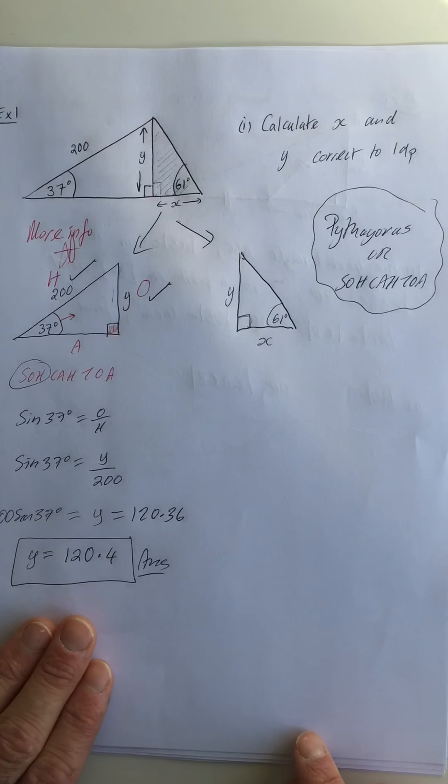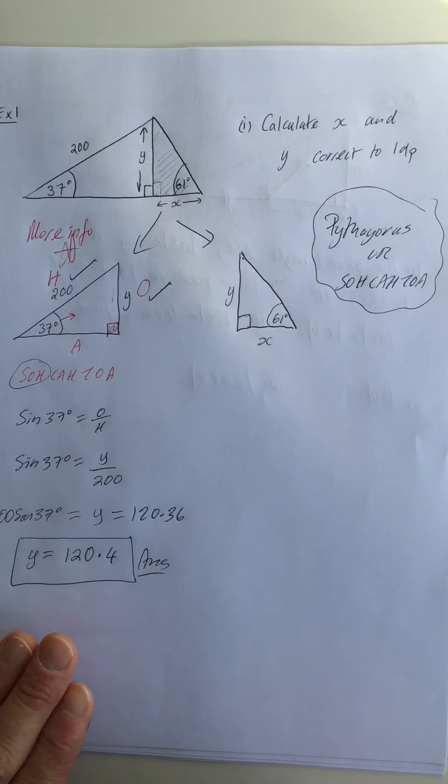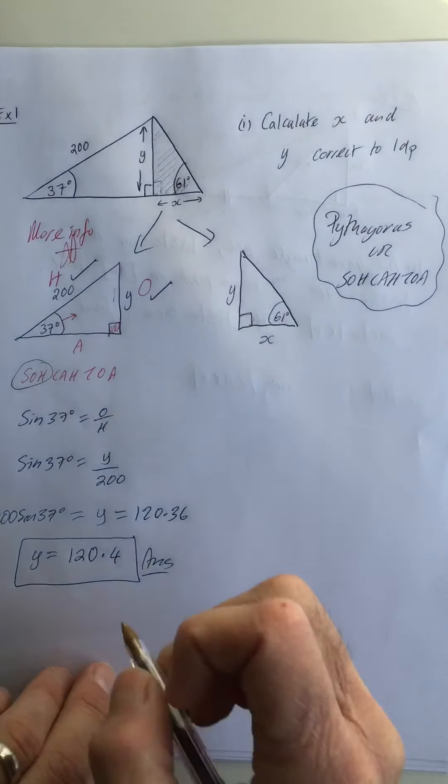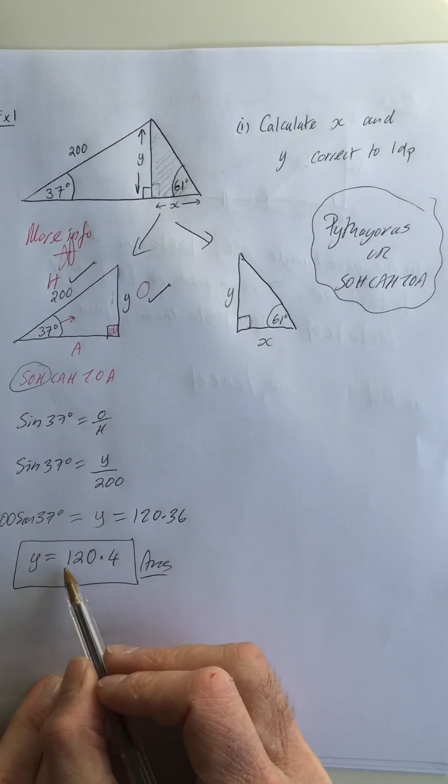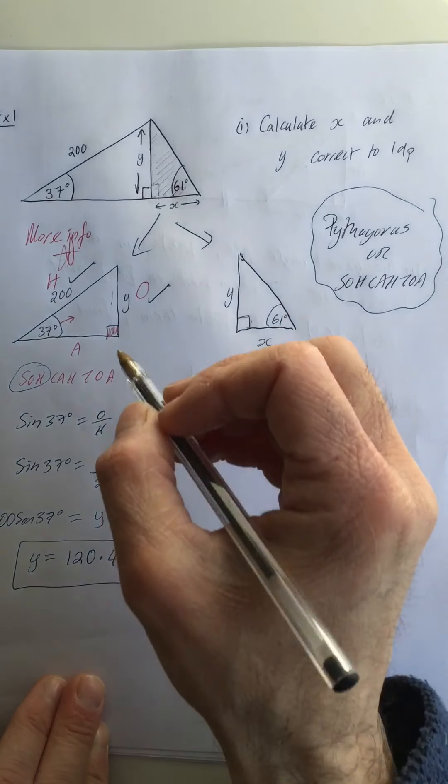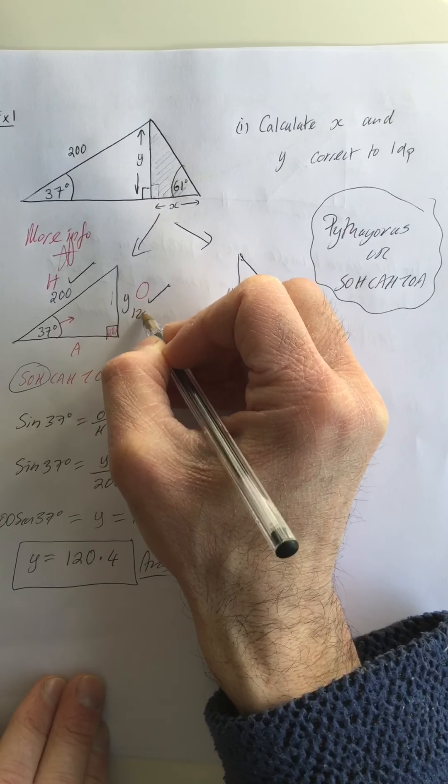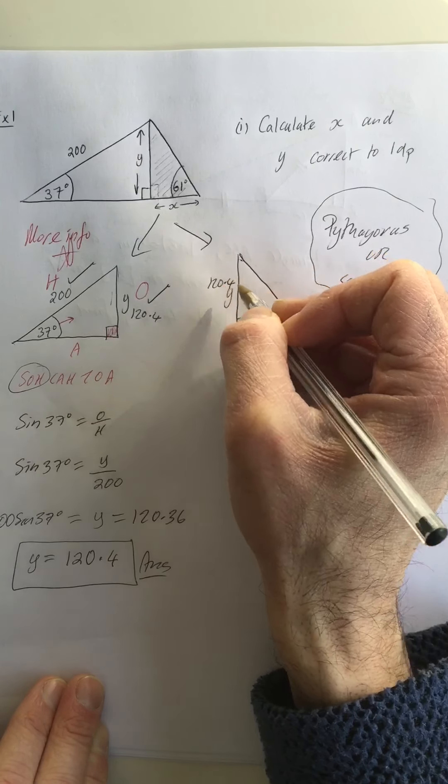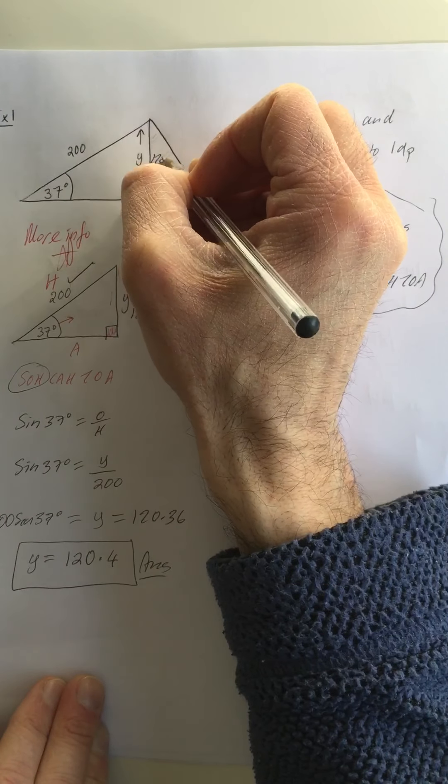Now whenever you've discovered new information on these questions, I want us to update our picture. What do I mean by updating our picture? We've just discovered y is 120.4, so I go back to my pictures and wherever I see y, I'm going to write 120.4. Look, here's another one: 120.4. And up here: 120.4.